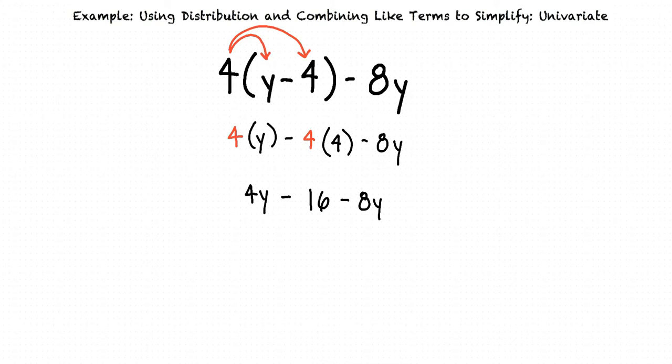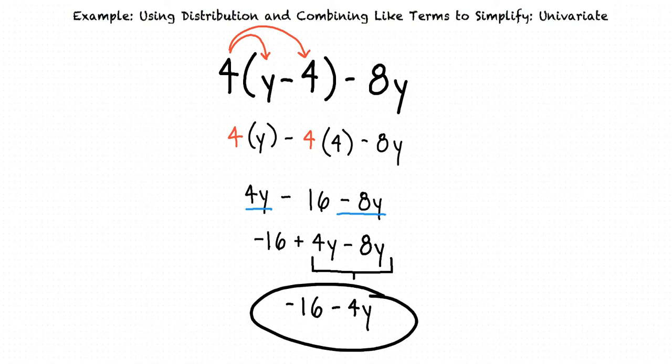Now we can simplify further by combining like terms. In this example, 4y and negative 8y are like terms. We will next reorder the expression so the like terms are next to each other, resulting in negative 16 plus 4y minus 8y. And since 4y minus 8y equals negative 4y, our final answer is negative 16 minus 4y.